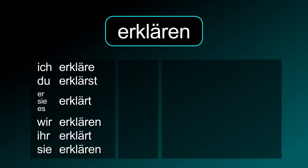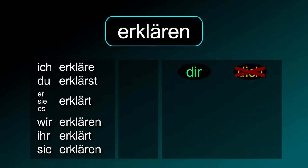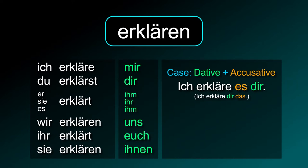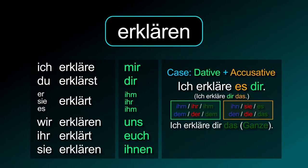Erklären conjugation: ich erkläre, du erklärst, er/sie/es erklärt, wir erklären, ihr erklärt, sie erklären. This verb needs the dative and the accusative case. Therefore, the correct way to say 'I explain it to you' is: ich erkläre es dir, or ich erkläre dir das.